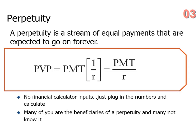I want to talk very quickly about what we call the present value of a perpetuity. A perpetuity is a stream of equal payments that are expected to go on forever — essentially, an annuity that is perpetual; it lasts forever. You don't actually use your financial calculator for this. The formula is: the present value of a perpetuity equals the payment you want to receive forever divided by R, where R is the rate of return you can earn on your money.